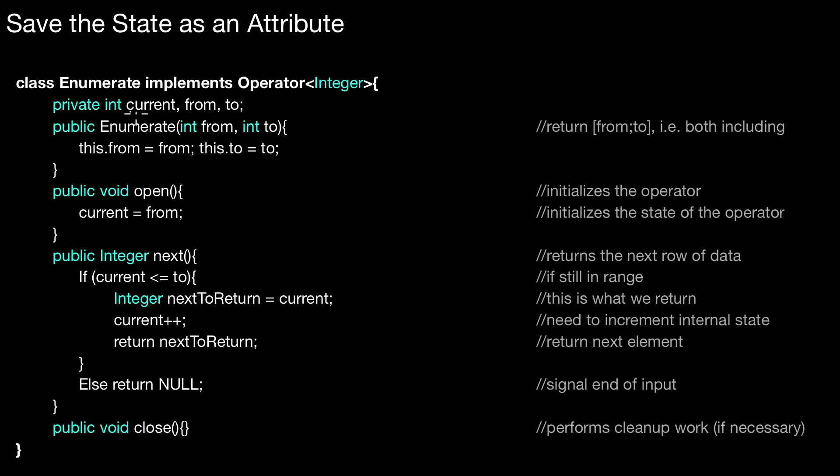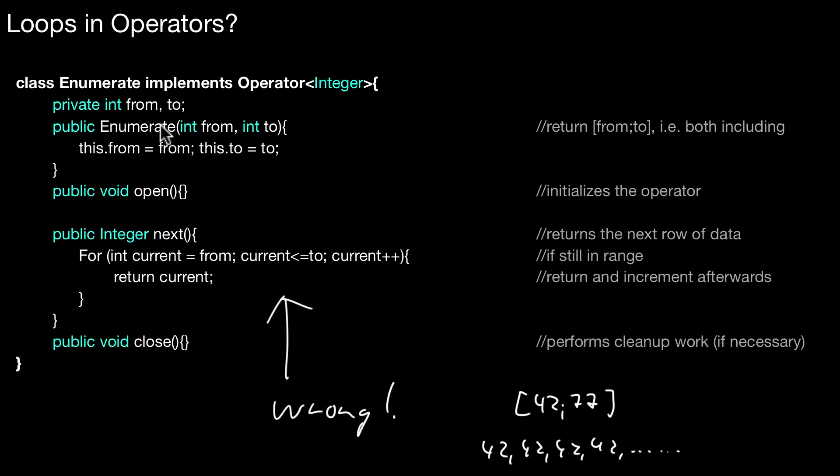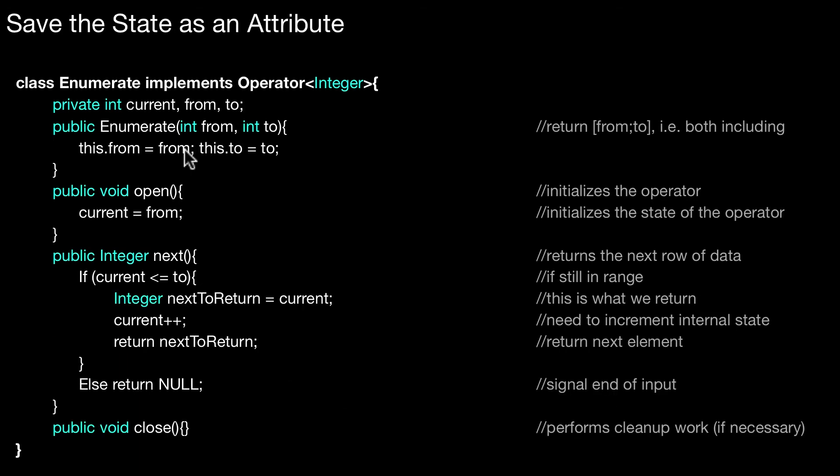Here I use an extra integer variable reflecting the current number I'm about to return. This looks very similar to what we had before. In the wrong example, we initialized these from and to variables with the ranges. But I have this third variable, which is initialized in the open call. Here I set current to be from.